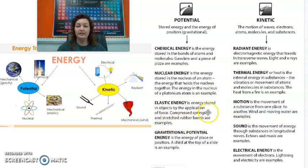Elastic energy we addressed for elastic potential. It's energy stored in objects by application of force. So compression springs, a stretched out rubber band, a bow and arrow, anything like that are really good examples of elastic energy. Gravitational potential energy we did already address. That's going to be energy of position, right? So the higher up something is, the more gravitational energy it's going to have. It says a child at the top of a slide is an example.